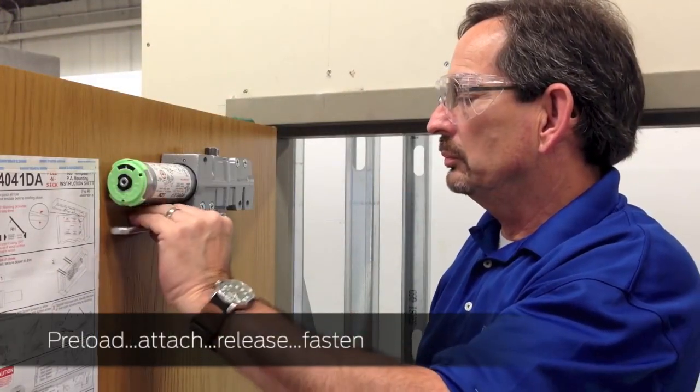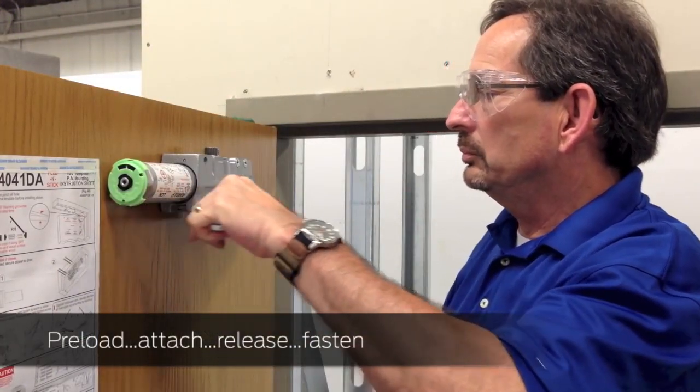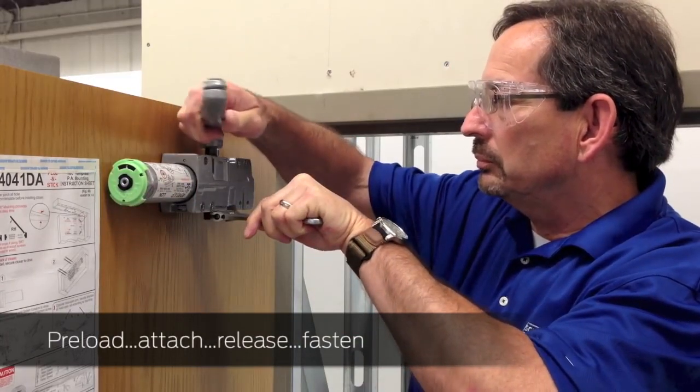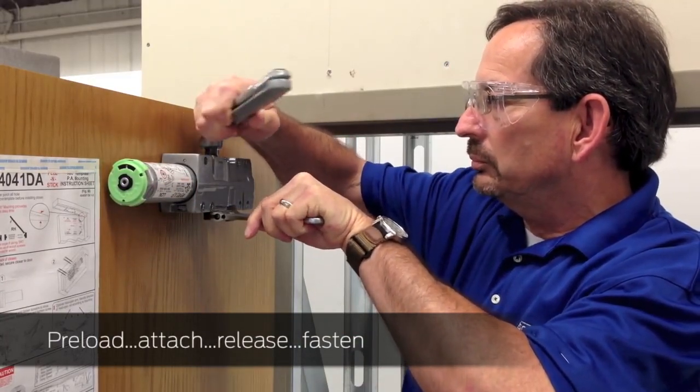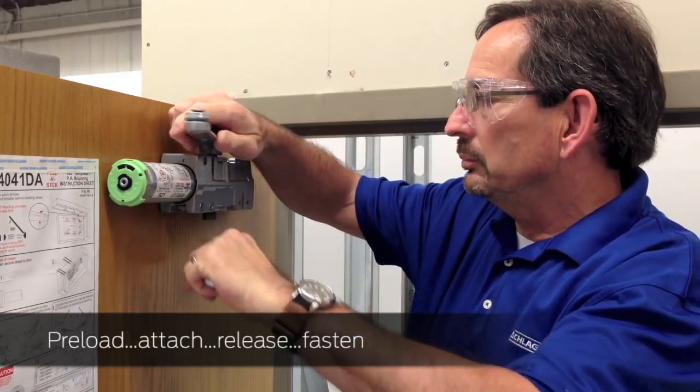Pre-load the closer to 30 degrees and hold. Attach the arm to the closer, then release the arm. Secure with the fastener.